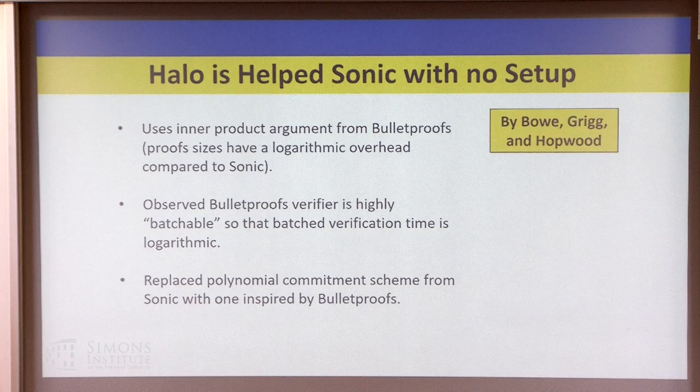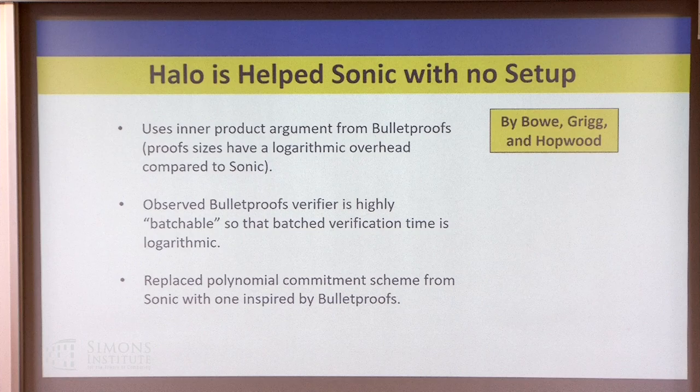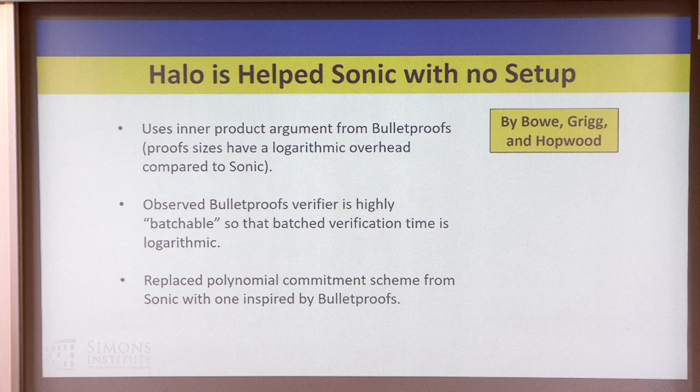Recently, Sean and others from Zcash introduced a way to implement Sonic without a trusted setup. They use the helper setting — the tricks don't work without a helper. They noticed that the Bulletproofs verifier is something you can generate an advice string for. If you have the advice string, you can check all the Bulletproofs proofs together, making the individual marginal costs quite small.